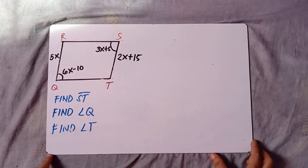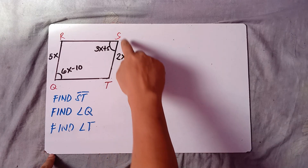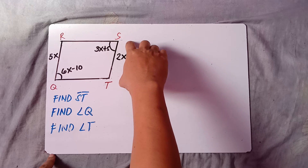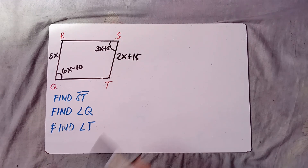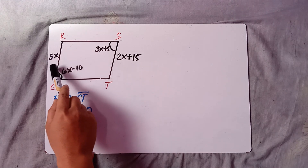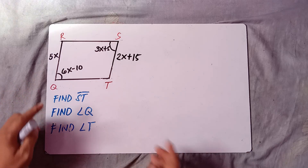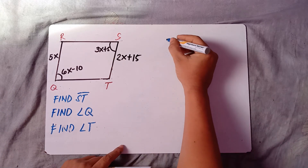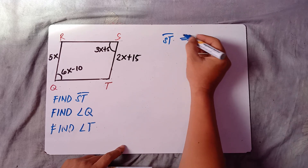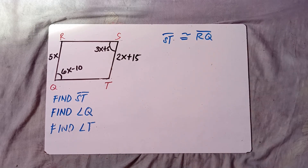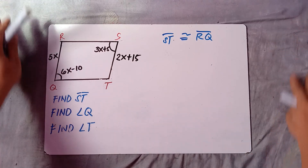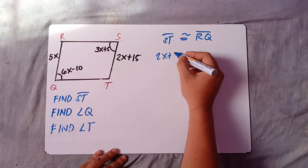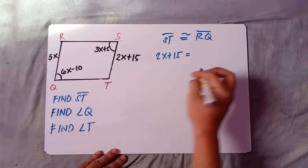We are told to find side ST. To find ST, do not forget that side ST is congruent to side RQ. According to the properties of parallelogram, opposite sides are congruent. So ST is 2X plus 15 and RQ is 5X.